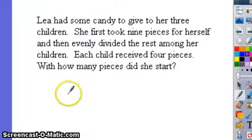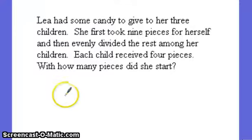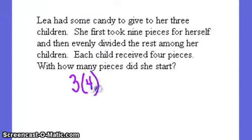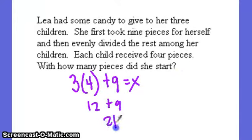Li had some candy to give to her 3 children. She first took 9 pieces for herself, then evenly divided the rest among her children. So with how many pieces did she start? So we've got 3 times 4 to each of her children plus the 9 that she ate is how many candy pieces that she started with. So this is 12 plus 9, which is 21.